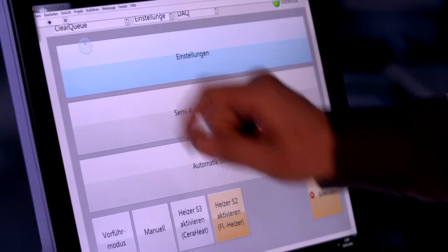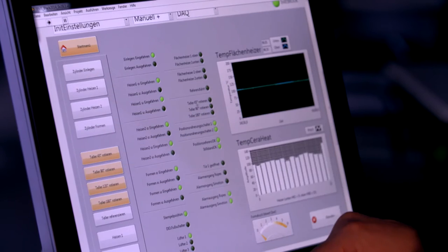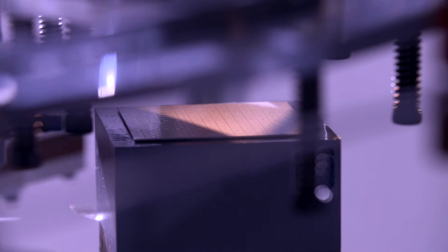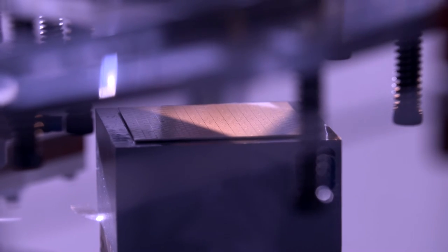When the foil is blown into the mold, the middle section is stretched the furthest, like a balloon. That gives the cup thick sides and an especially thin bottom. The original foil has to be thick enough to keep the bottom stable. That means the sides contain more material than necessary.